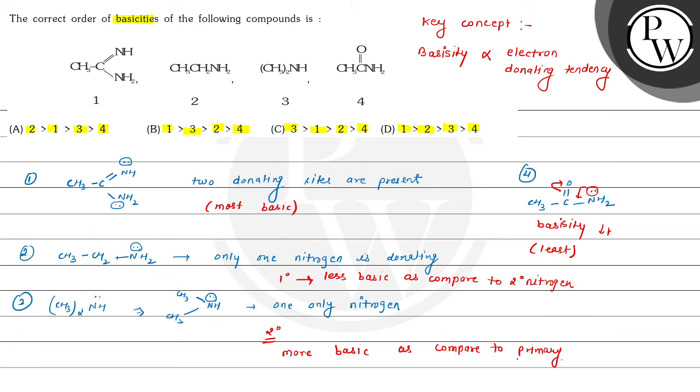That means we can write here the order. The final order will be the most basic is first. After that here the third then second and then fourth. Yeah least basic is fourth one. This order that is one is greater than third is greater than second is greater than fourth is given in option B. Hence option B is the correct choice for this question. Hope you understood it well. All the best and thank you.